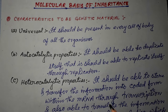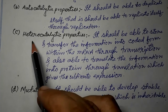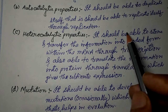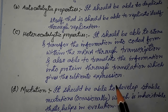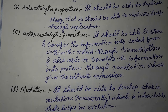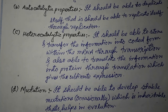Through replication, the genetic material should be able to duplicate and make a copy of itself. The third characteristic is heterocatalytic properties. Hetero means different, catalysis means synthesize. So the genetic material should be able to synthesize other molecules — specifically, it should be able to store and transfer the biological information in coded form within the mRNA through transcription, and also be able to translate the information into protein through translation, which gives the ultimate expression.